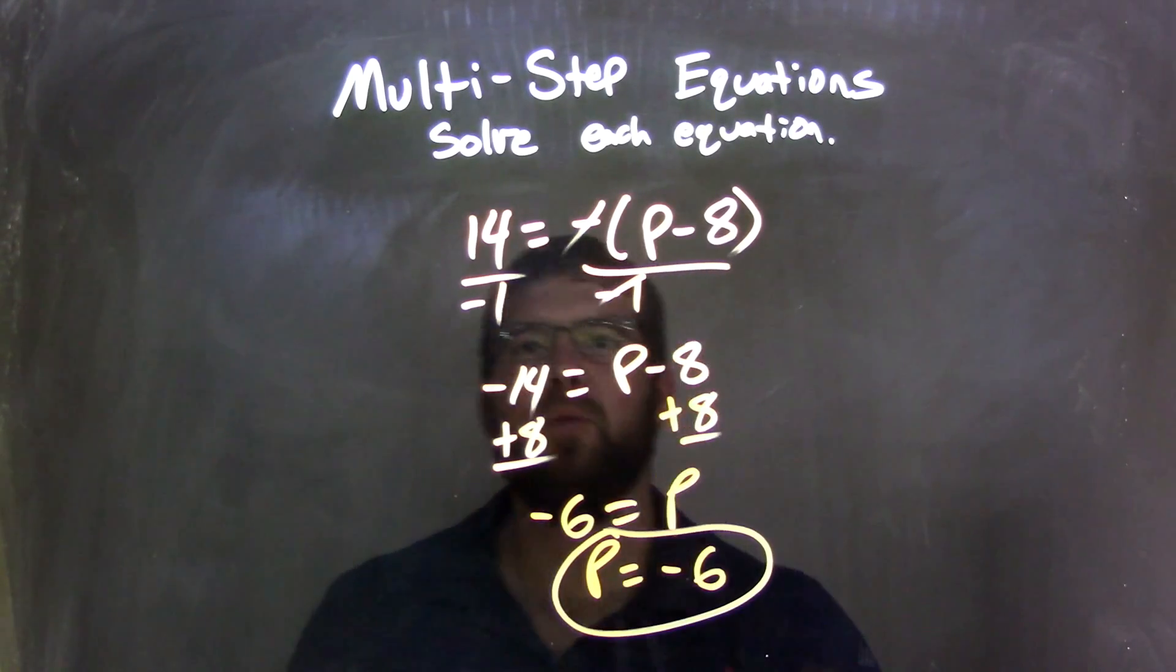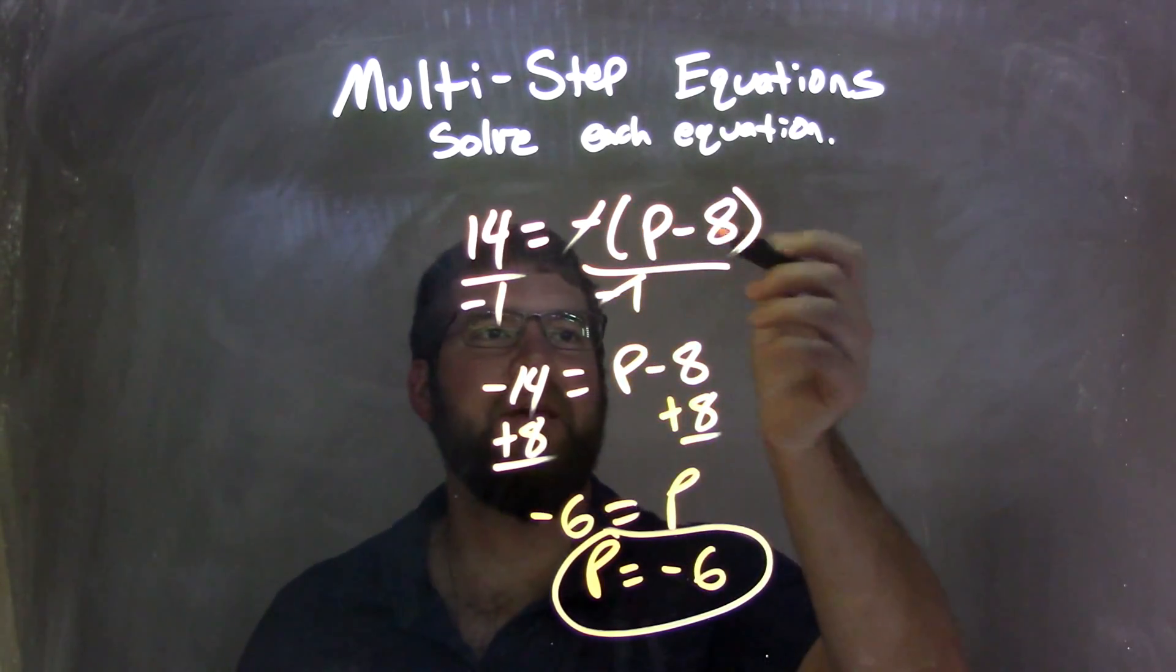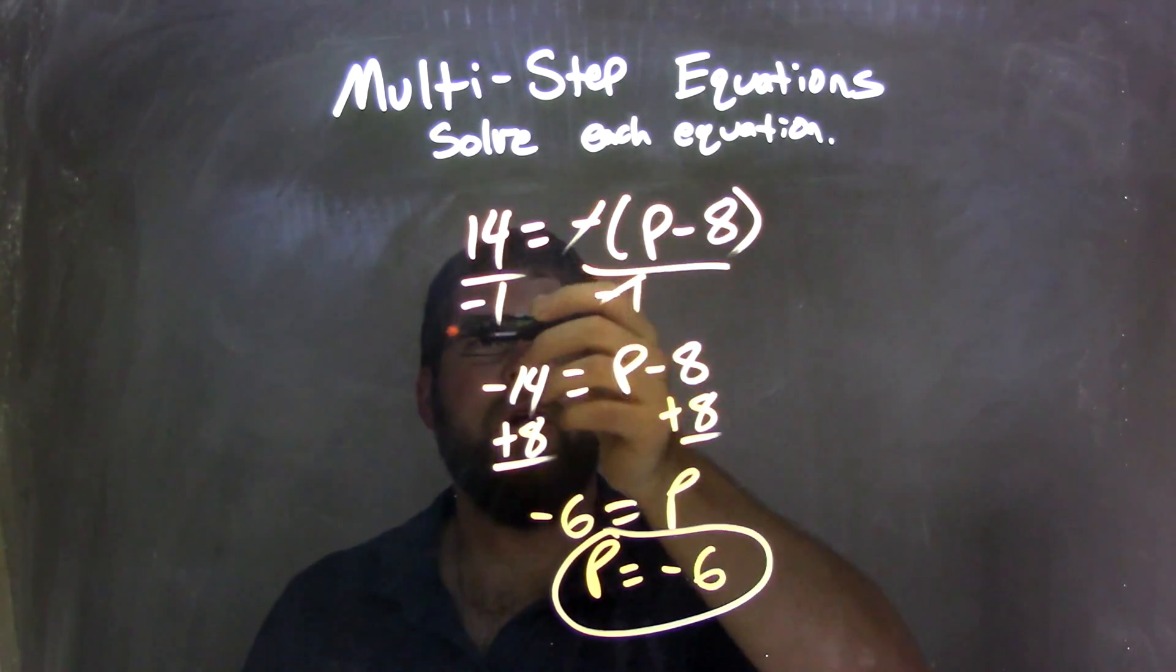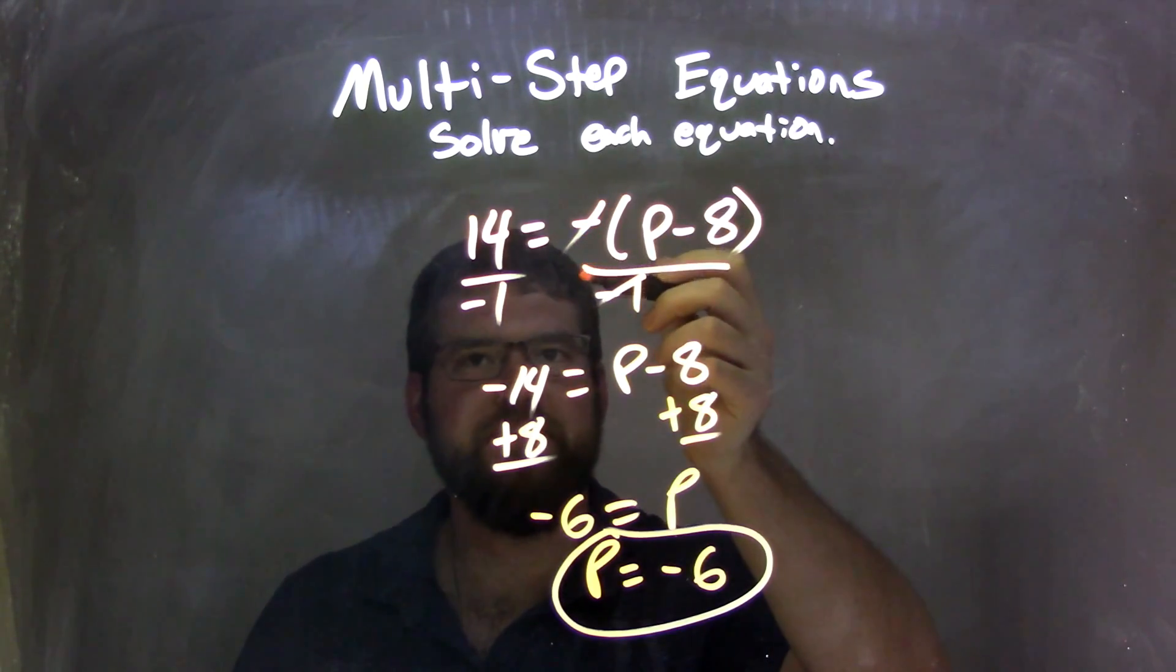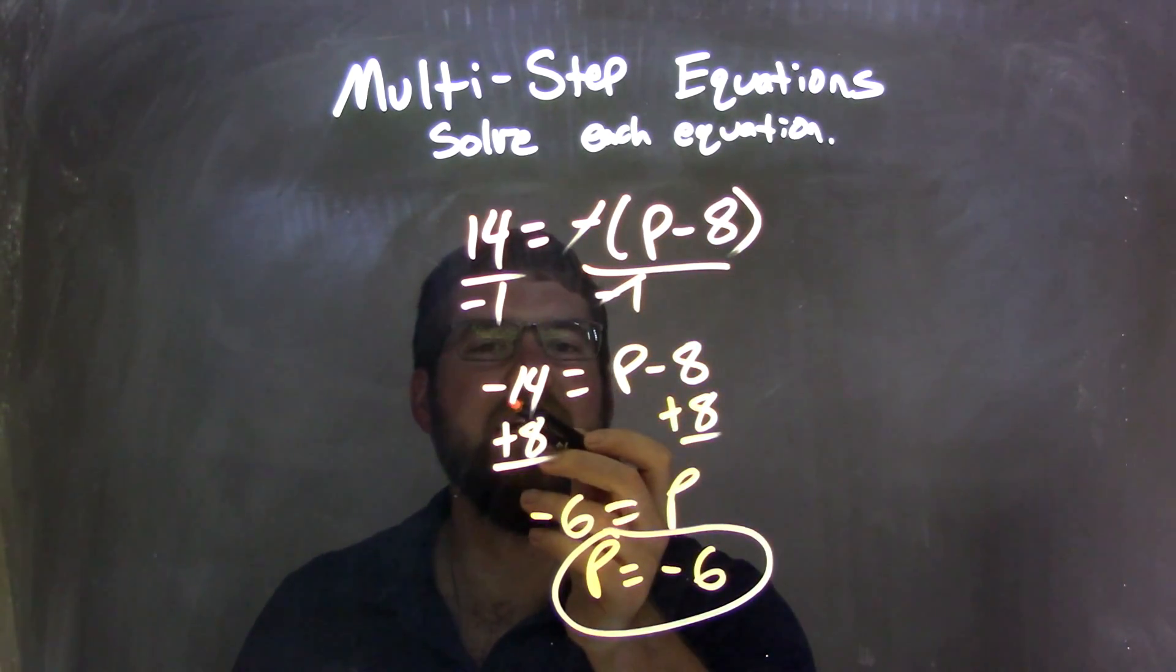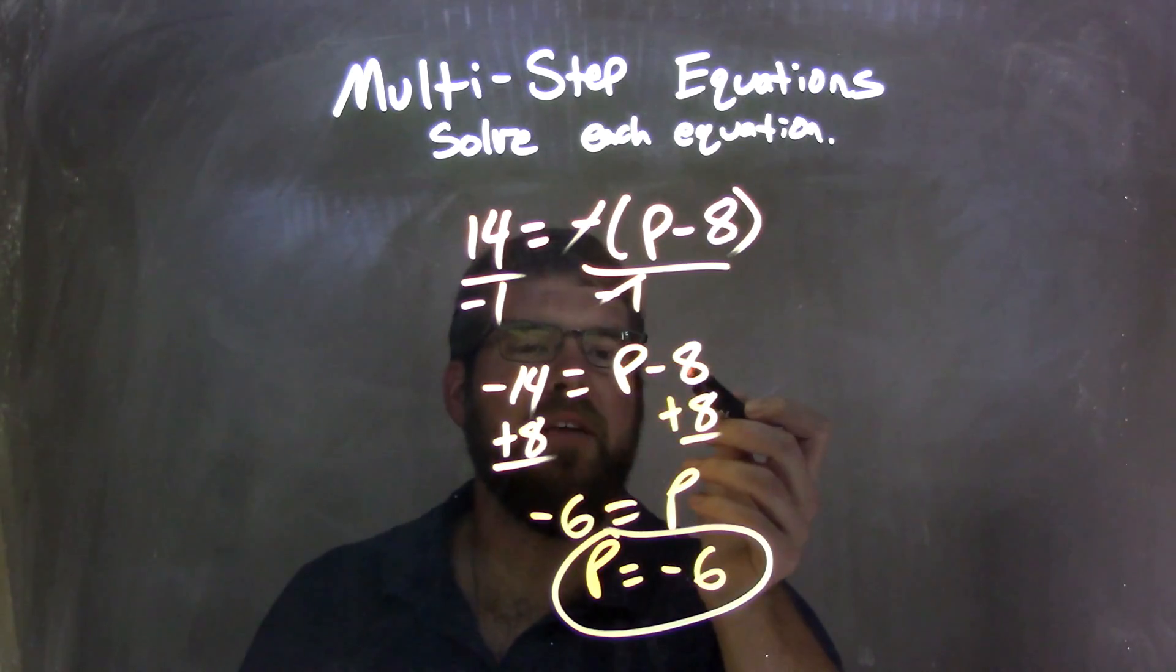So let's recap. We started with 14 equals negative parentheses p minus 8. I divided by negative 1 on both sides to get rid of that negative out front. Now we had negative 14 here on the left, and then p minus 8 just on the right.